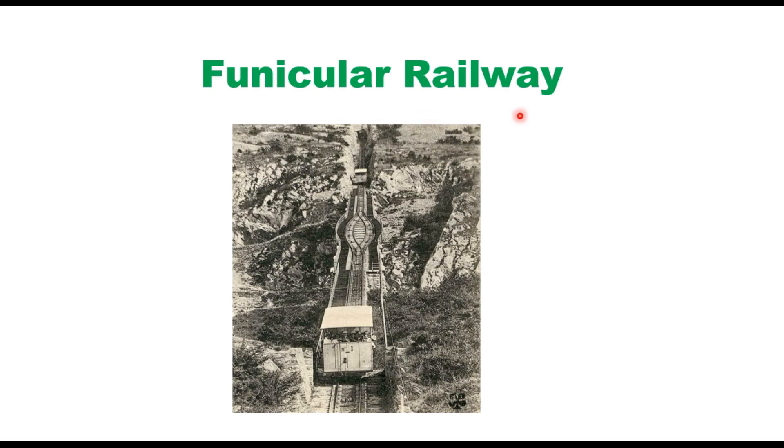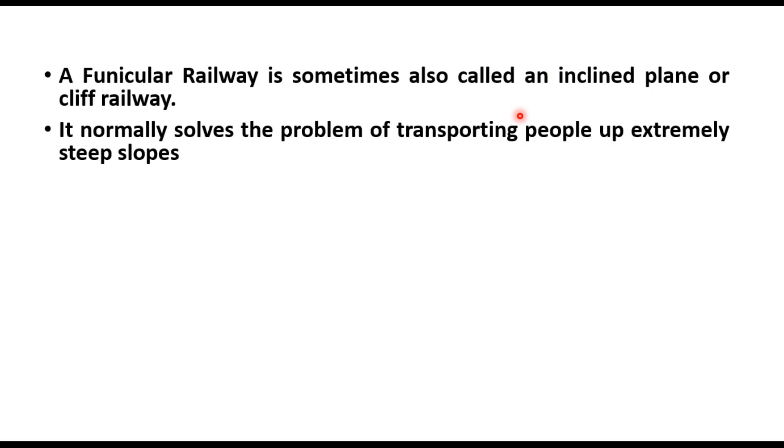A funicular railway is sometimes also called an inclined plane or cliff railway, but these are not the same. The only similarity in these three types of railway is that they normally solve the problem of transporting people up extremely steep slopes.